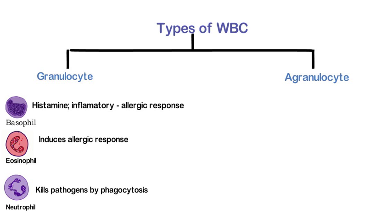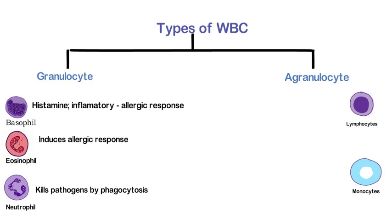The other type of white blood cell is agranulocytes, which have a large nucleus. They are further subdivided into lymphocytes, which have a very large nucleus and are responsible for forming antibodies and developing the immune system, and monocytes, which possess a phagocytic mode of action when the immune system is threatened by any foreign pathogen.